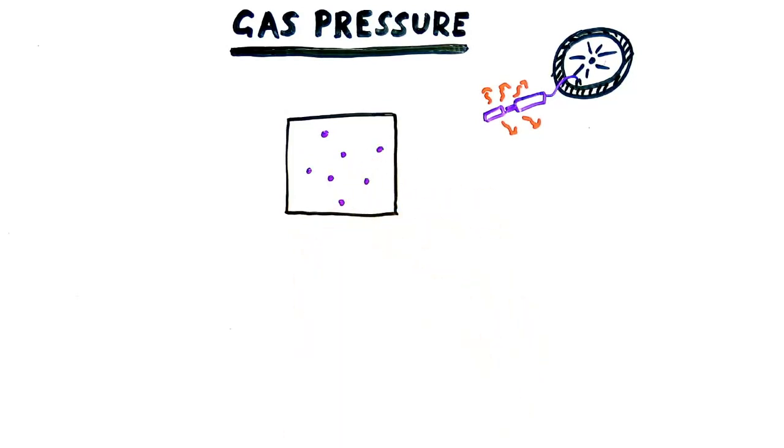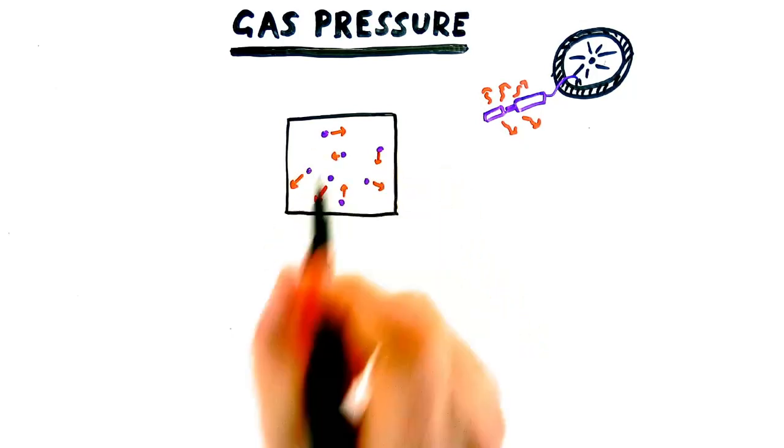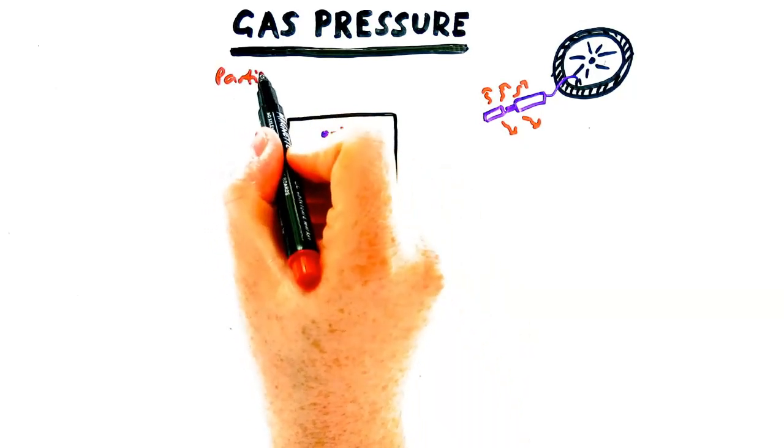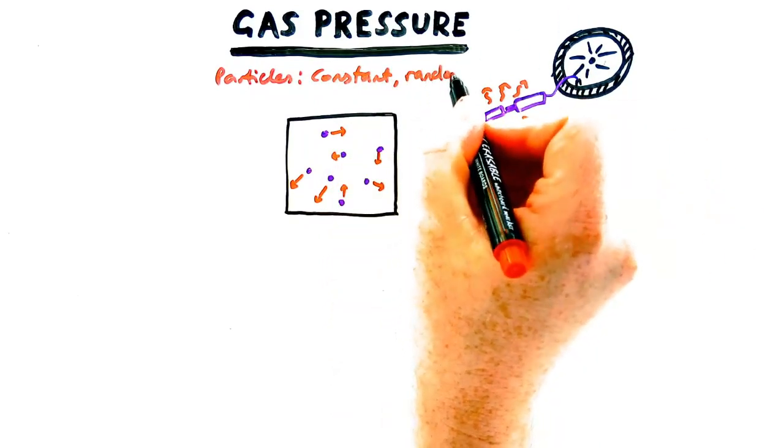So to understand gas pressure let's recap how gas particles move. Now as I'm showing with the arrows here they're moving in all directions randomly and they also move at a range of speeds. So it's called constant random motion.